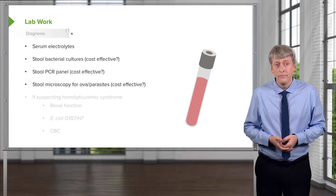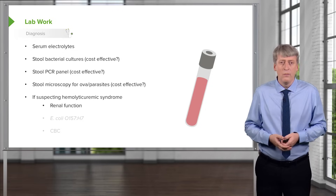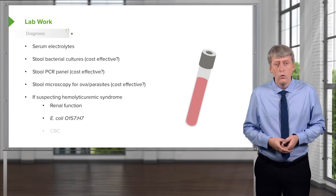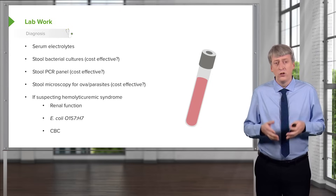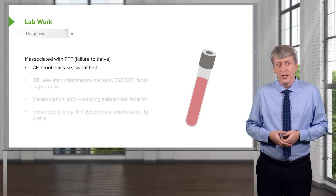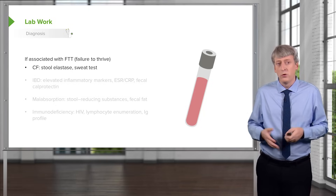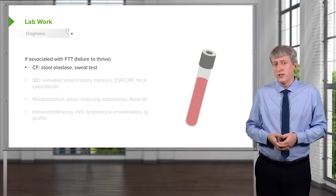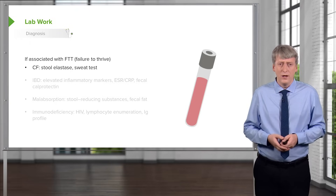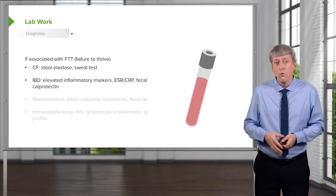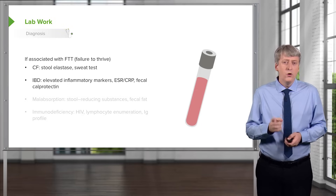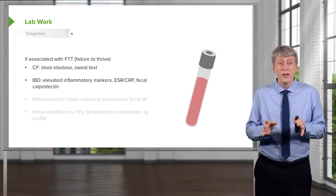If you're suspecting hemolytic uremic syndrome, it's critically important to assess renal function, test for E. coli O157:H7, and get a CBC to look for thrombocytopenia and anemia. If you suspect failure to thrive associated with prolonged diarrhea, consider cystic fibrosis — stool elastase can be checked, but the cheapest and easiest test is a sweat test. For inflammatory bowel disease patients, check elevated inflammatory markers such as ESR or CRP, but remember those may be normal even during an IBD flare.